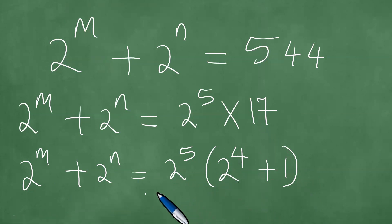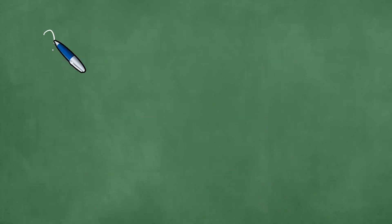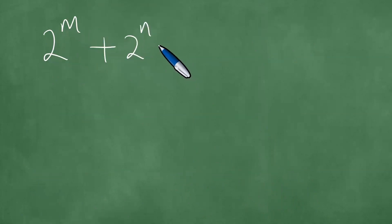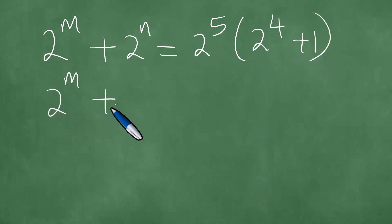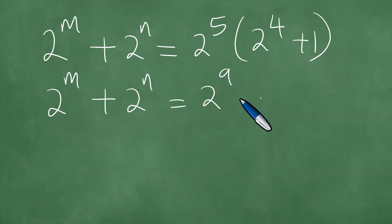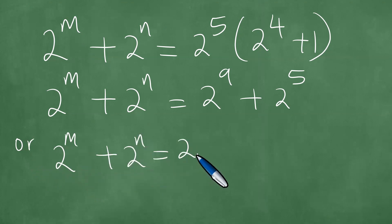At this point we can apply the distributive law — multiplication distributes over addition. Using that property, 2 to the power 5 times (2 to the power 4 plus 1) expands to 2 to the power 9 plus 2 to the power 5.